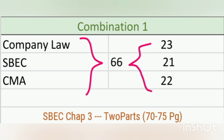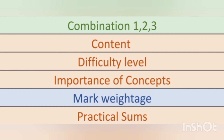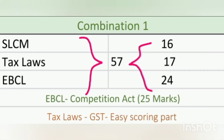Some chapters will be around 10 to 12 pages and some will be around 75 to 80 pages. Even some chapters will be divided into two parts — like in SBC, the third chapter has two parts: charter documents of a company, and alteration of charter documents, both around 70 to 75 pages totally. The daily study plan is purely based on content difficulty level, importance of concepts, mark weightage of each chapter, and for practical papers, the level of difficulty of practical sums under various headings like consolidation statements, cost sums, etc.